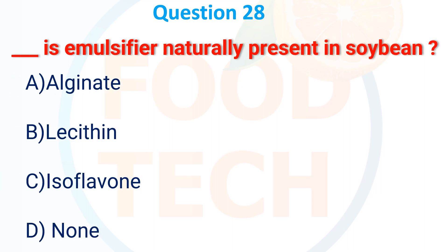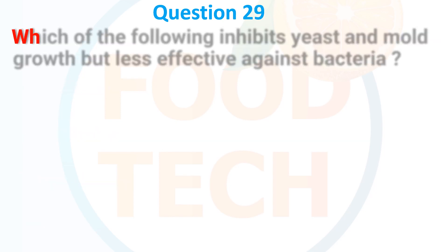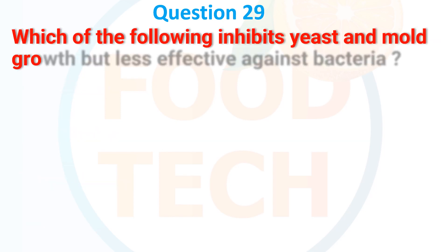Lecithin is an emulsive oil naturally present in soybean. A. Alginate, B. Lecithin, C. Isoflavones, D. None. The answer is B. Lecithin.